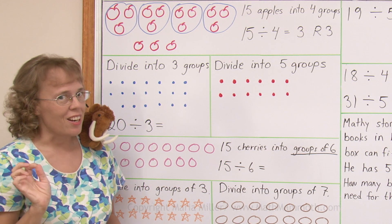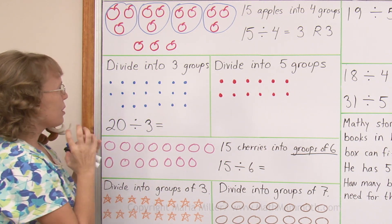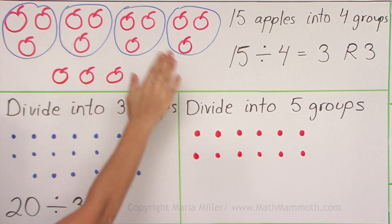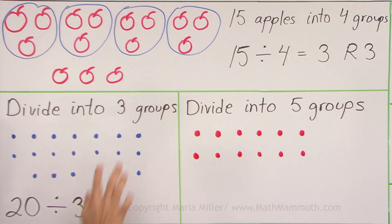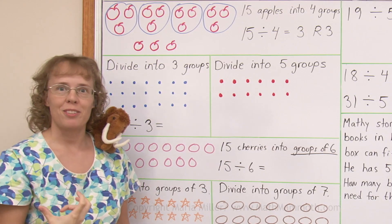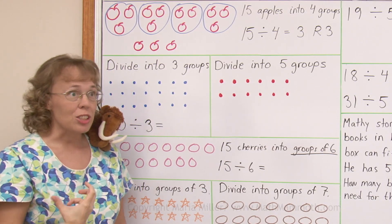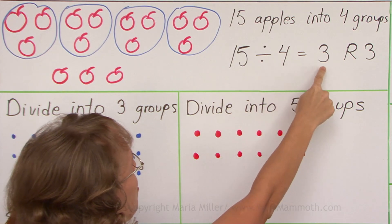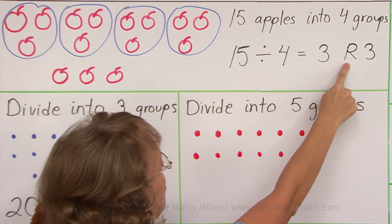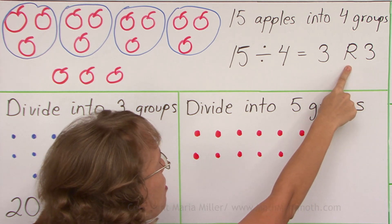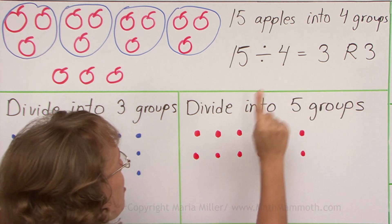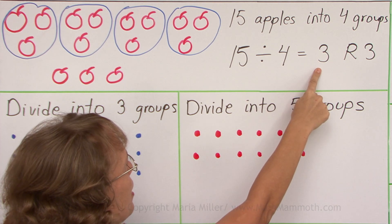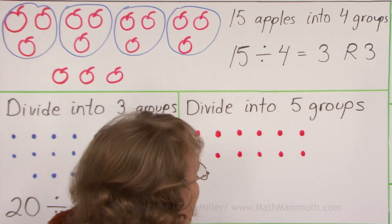And then there are three apples left over that cannot be divided equally — unless you take a knife. But if we are thinking of whole apples, then this is the situation. Three apples left over, and these three apples are the remainder in our division. We write 15 divided by four equals three, remainder three. This R is for the remainder. So it means there are four groups, three apples in each group, and three apples left over.